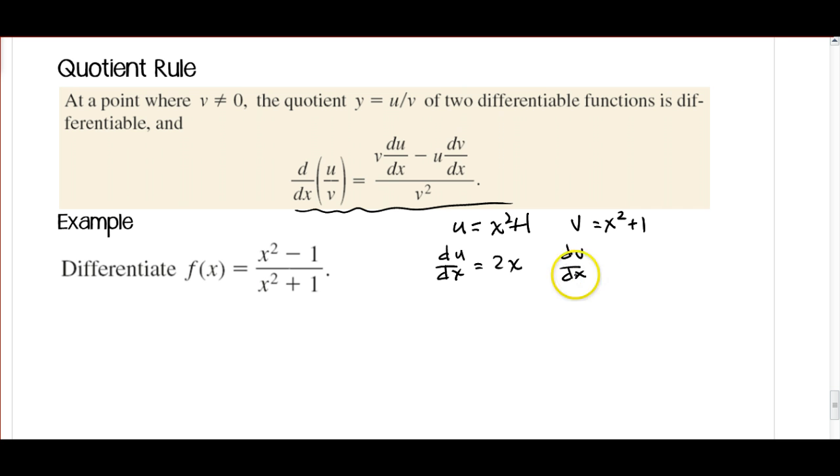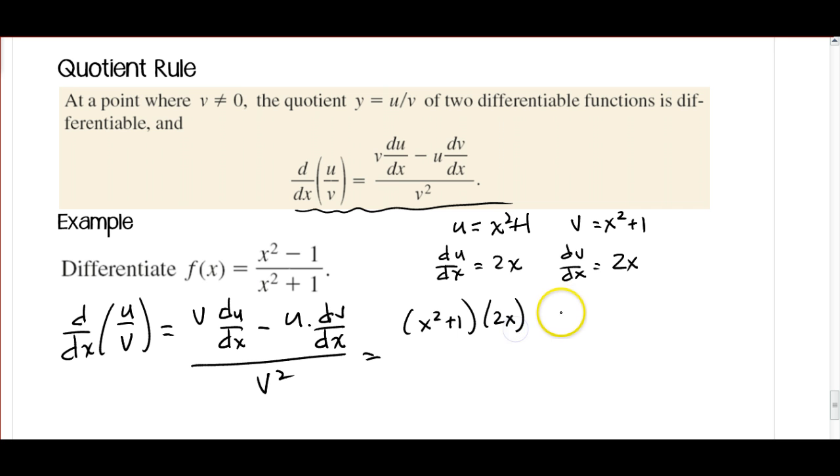So dv/dx is going to be 2x. And I know that d/dx of u divided by v is going to be v times du/dx minus u times dv/dx all over v squared. Substituting everything, I've got x squared plus 1 times 2x minus x squared plus 1. That's my u function times dv/dx, which is 2x also. And this is all going to be over my v function squared, which is x squared plus 1 squared.